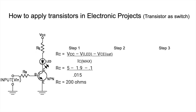Now what about RB? RB is also somewhat related to RC. To find RB, we first need to know the current requirement at the base, which is IB. IB is the current flow in the base junction. IC was already calculated as 0.015 A. Step 2 is the calculation of IB. The LED is near the collector, so its current is called IC.